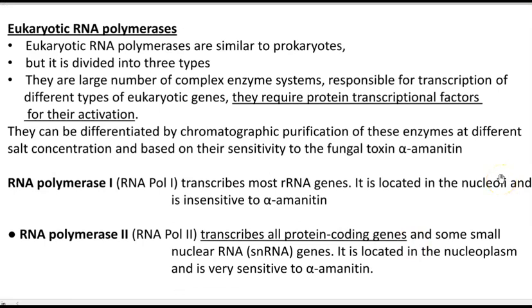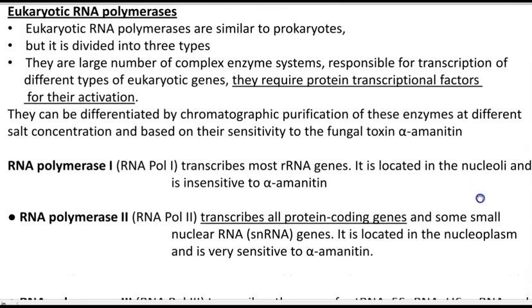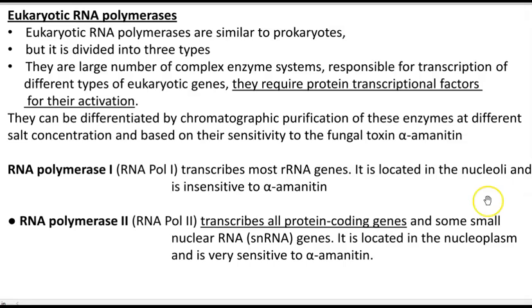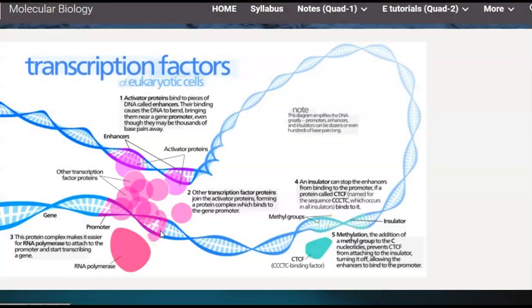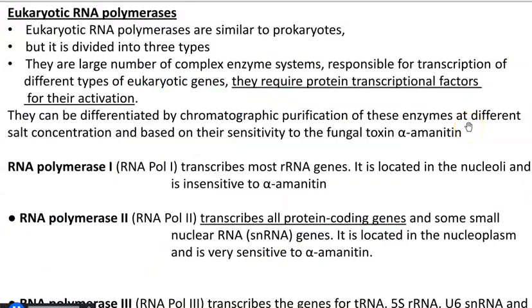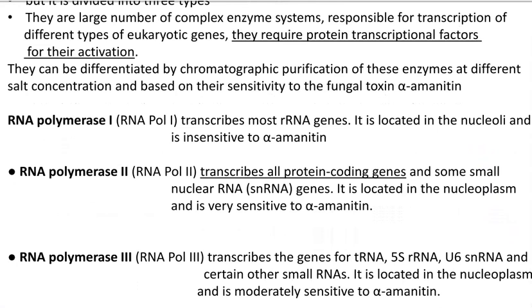Next we look at eukaryotic RNA polymerases. They are similar to prokaryotic ones, however three forms of RNA polymerase exist in eukaryotic organisms. They are large, complex enzyme systems required for transcription of different types of eukaryotic genes and require many protein transcription factors for their activation. These eukaryotic RNA polymerases can be differentiated based on chromatographic purification at different salt concentrations and based on sensitivity towards the fungal toxin alpha-amanitin. Based on these two factors, three different kinds of RNA polymerase activity can be recognized.